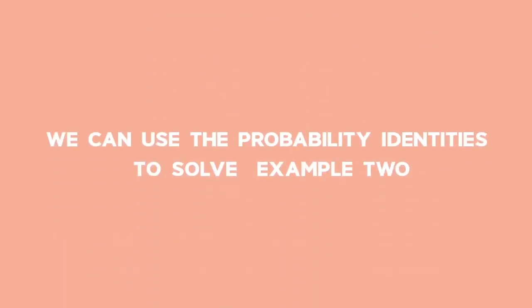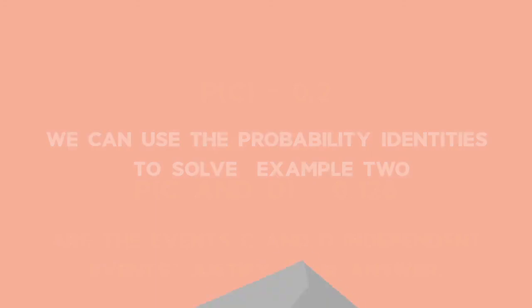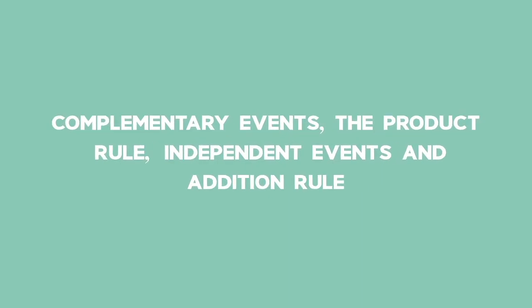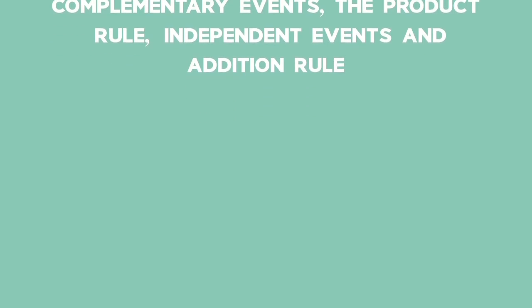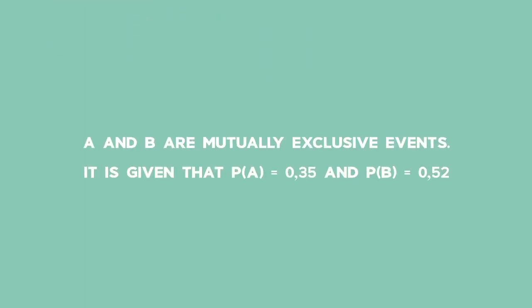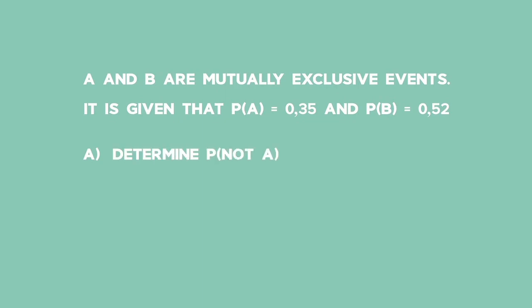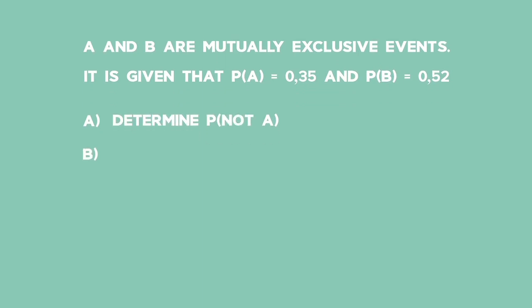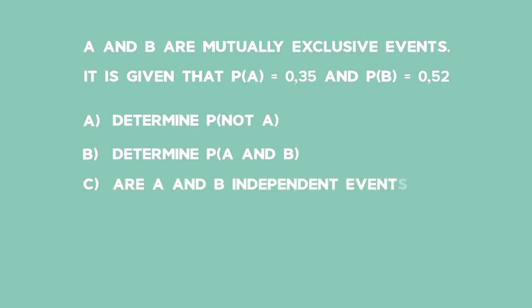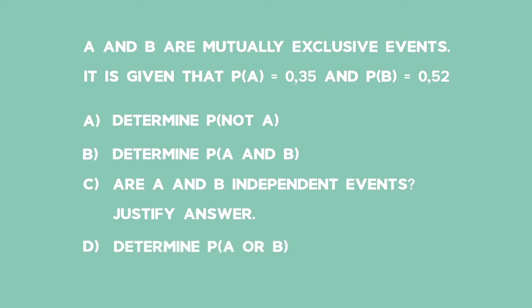We can use the probability identities to solve Example 2: Complementary events, the product rule, independent events, and the addition rule. A and B are mutually exclusive events. It is given that the probability of event A is 0.35 and the probability of event B is 0.52. Determine: A) the probability of not getting event A; B) the probability of getting event A and event B; C) are A and B independent events — justify your answer; and D) the probability of getting A or B.